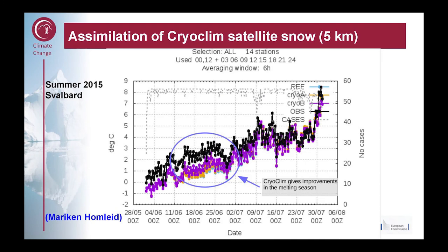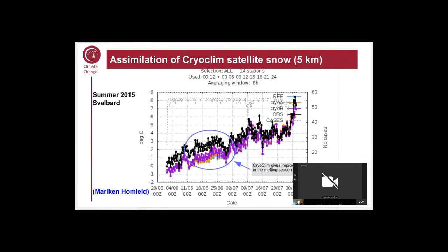We also assimilate Cryoclim satellite snow data at five-kilometer resolution. Here is one of the test experiments we ran when inputting these new data. You can see the reference experiment in light blue, observations in black, and the Cryoclim experiment in purple — it's moving towards the correct observed temperatures when we input these data. It's not solving all the problems, since discrepancies are due to many factors, but you can see it gives improvements in the melting season. Removing snow as it melts is very important to get the surface energy balance right.